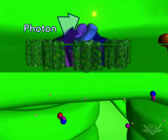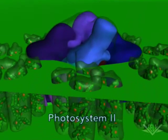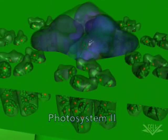First, a photon of light hits a chlorophyll molecule surrounding the photosystem II complex. This creates resonance energy that is transferred through neighboring chlorophyll molecules.